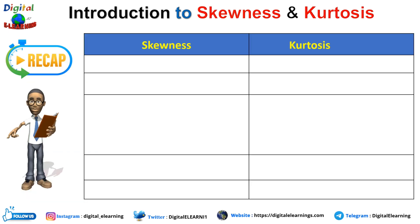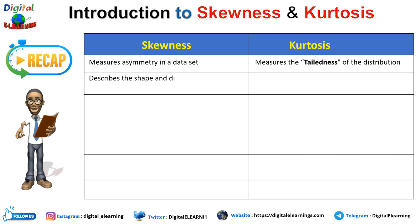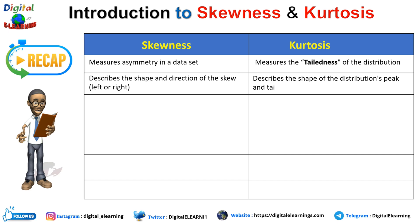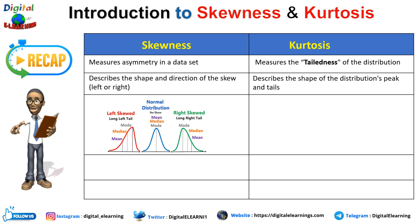Now let's do a quick recap of skewness and kurtosis. Skewness measures the symmetry in the data set, while kurtosis measures the tailness of a distribution. Skewness describes the shape and direction — whether it is left skewed or right skewed. There are three types of skewness: left skewed, right skewed, and no skew. Left skewed has a long left tail; right skewed has a long right tail; and normal distribution has no skew — in that case, mean equals median equals mode.